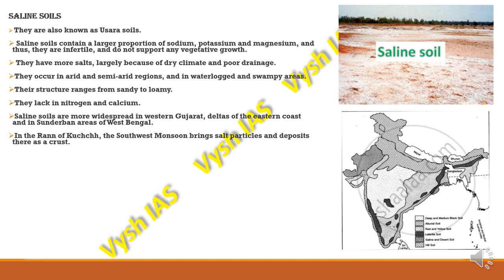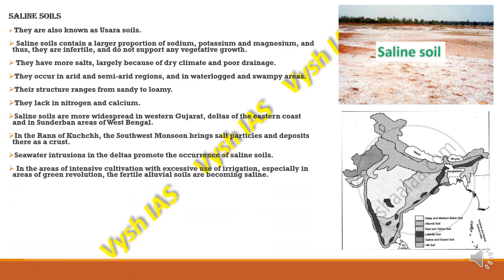In the Rann of Kutch, the southwest monsoon brings salt particles and deposits them on the crust. Seawater intrusions also promote more occurrence of saline soils. In areas of intensive cultivation and excessive irrigation — especially where the Green Revolution occurred — fertile alluvial soil can become saline.